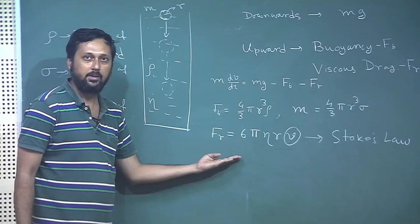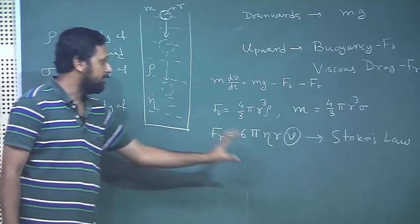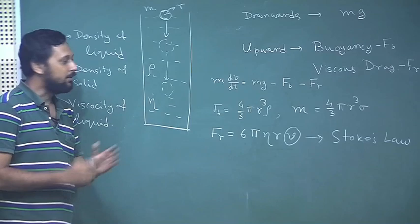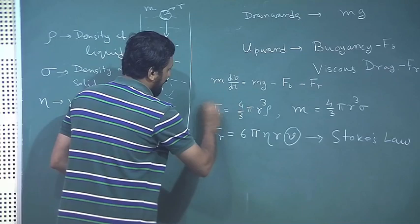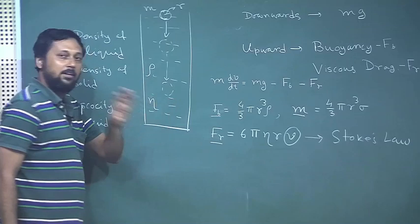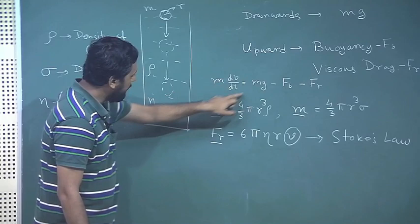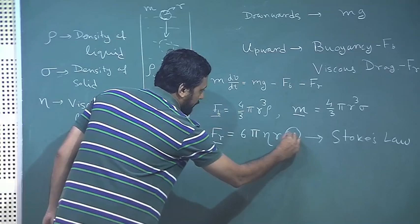The viscous drag is determined by Stokes' law. Please remember this expression is valid only for spherical objects; it is also an idealistic equation — in reality there is a correction term associated with 6π. Now, plugging in expressions for f_b, f_r, and m, and setting dv/dt = 0 to find terminal velocity, the left-hand side becomes 0.